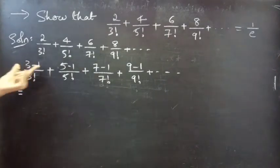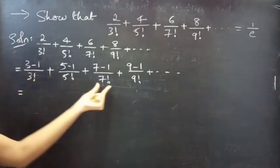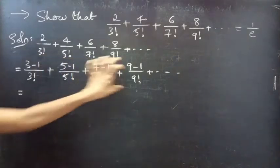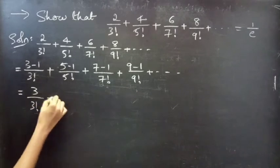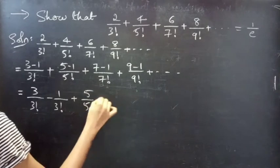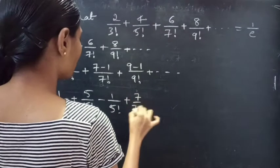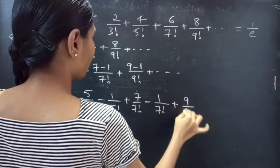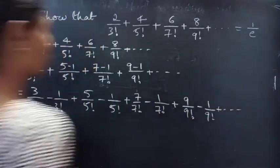Since the numerator has 2 terms and the denominator has 1 term, you can express each fraction into 2 fractions. You will get 3/3! - 1/3! + 5/5! - 1/5! + 7/7! - 1/7! + 9/9! - 1/9! + so on.